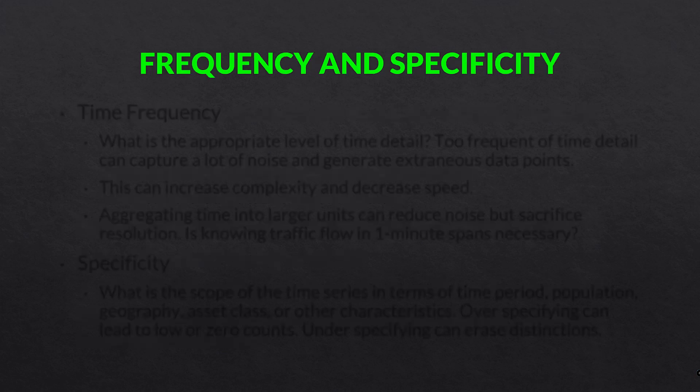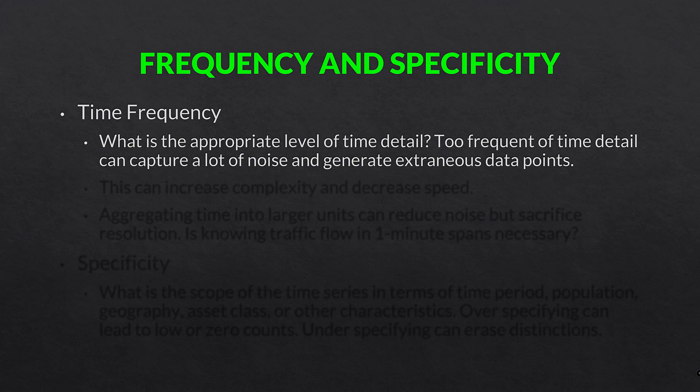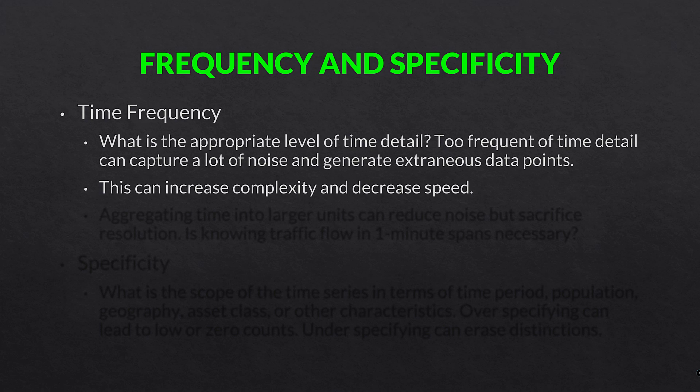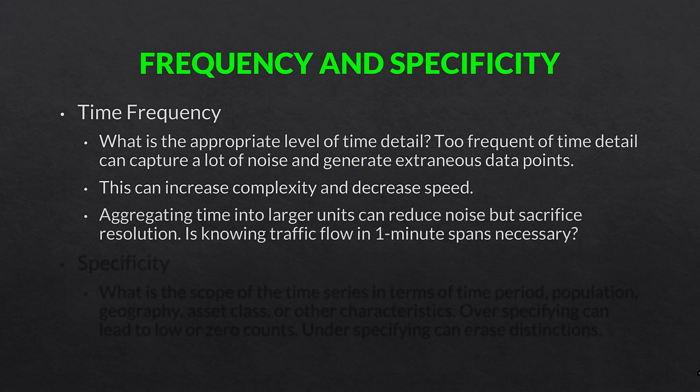Next, frequency and specificity. What is the appropriate level of time detail? Too frequent of time detail can capture a lot of noise and generate extraneous data points, which can increase complexity and decrease speed in your analysis. Aggregating time into larger units can reduce noise but sacrifice resolution. For example, if you're analyzing traffic flow over time, is knowing that flow in one-minute spans necessary, or is every 30 minutes or one hour sufficient? Similarly, for CO2 emissions, is daily data necessary or would weekly, monthly, or annual suffice?